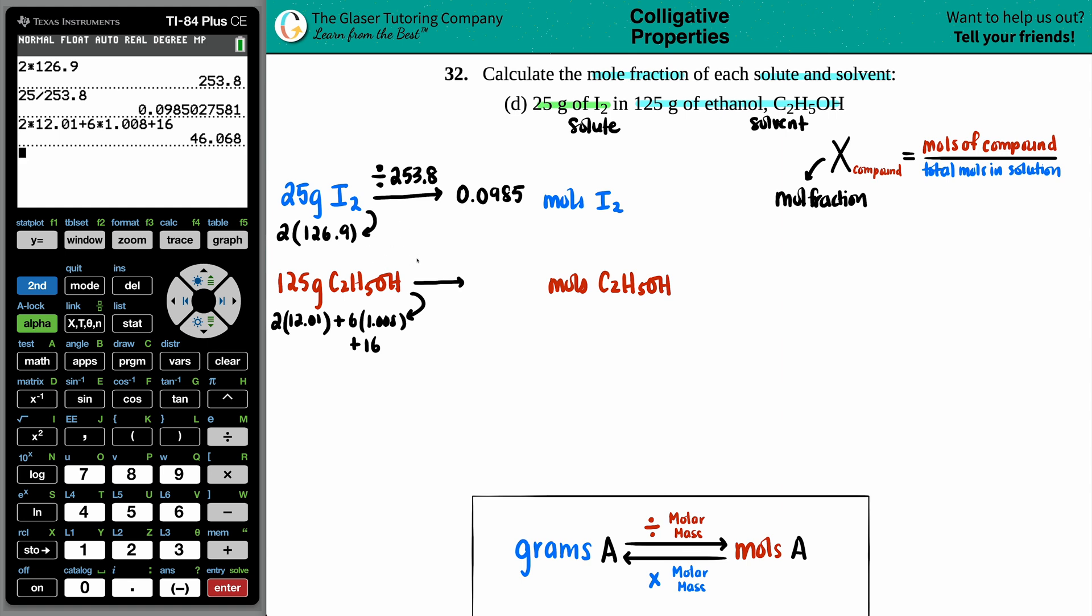So I have to take the 125 and divide it by 46.068. 125 divided by 46.068. I swear you can make songs with just numbers. And we get 2.713. That's good enough for me.